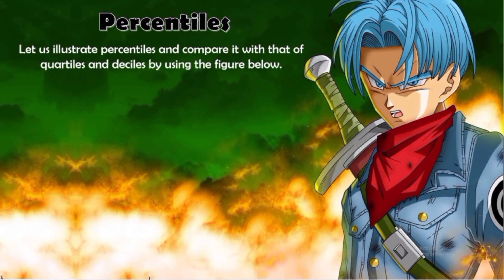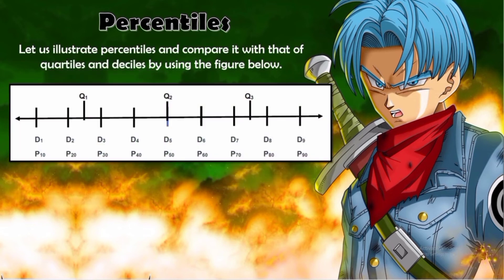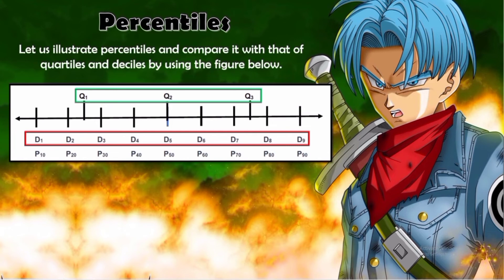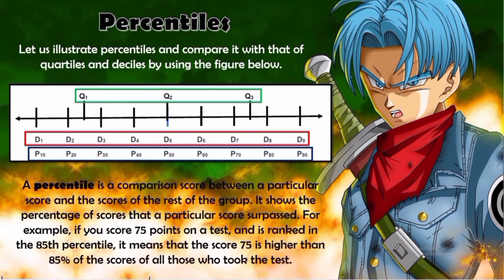We can illustrate percentiles and compare them with quartiles and deciles using a figure. Quartiles divide data into 4 equal parts, deciles into 10 equal parts, and percentiles into 100 equal parts. A percentile is a comparison score between a particular score and the rest of the group. For example, if you score 75 points on a test and are in the 85th percentile, it means your score of 75 is higher than 85% of all scores.